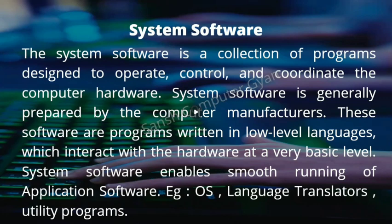If we have a compiler, then programs made in application software can be understood by the machine. Because the machine only understands 0s and 1s, we need something to translate our high-level language into machine language.